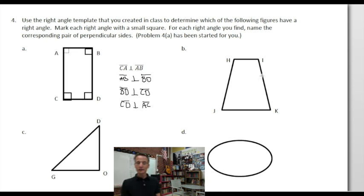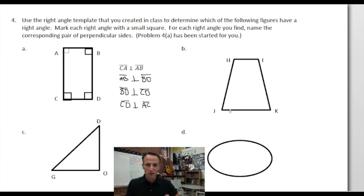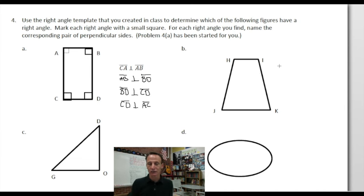This is the aforementioned trapezoid. If you look at these four corners, these four angles, there are no right angles there. So rather than leave this blank, I'm going to write 'no right angles' — I encourage you to do as well, so your teacher doesn't think you just skipped it. No right angles!